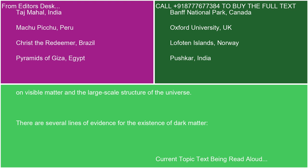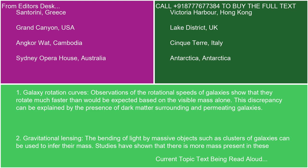There are several lines of evidence for the existence of dark matter. 1. Galaxy Rotation Curves. Observations of the rotational speeds of galaxies show that they rotate much faster than would be expected based on the visible mass alone. This discrepancy can be explained by the presence of dark matter surrounding and permeating galaxies.